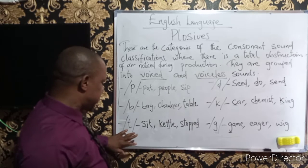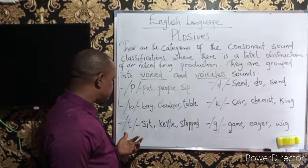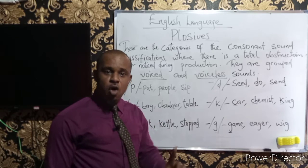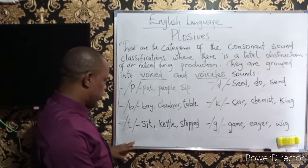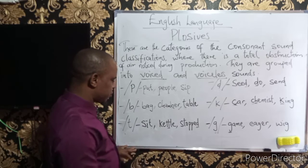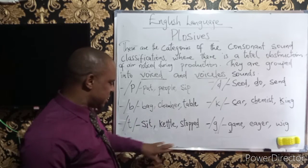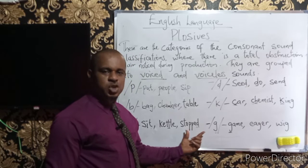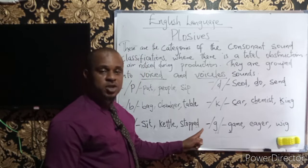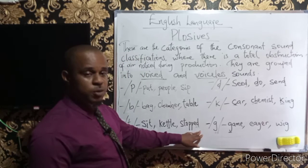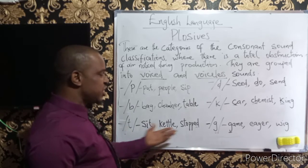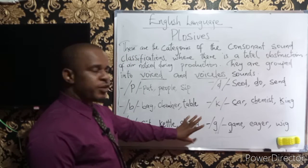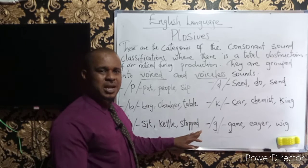The next sound is /t/. This is also a voiceless sound because the vibration is very little or none at all realized in the vocal cord. We have it in words like 'seat', 'kettle', and 'stopped'. Note that 'stopped' ends in the spelling 'ed', but we are not concerned about the spelling — only the sound obtained, which is /t/ as pronounced in 'stopped'. Remember, we don't focus mainly on the spellings of words, but the sounds that are produced.